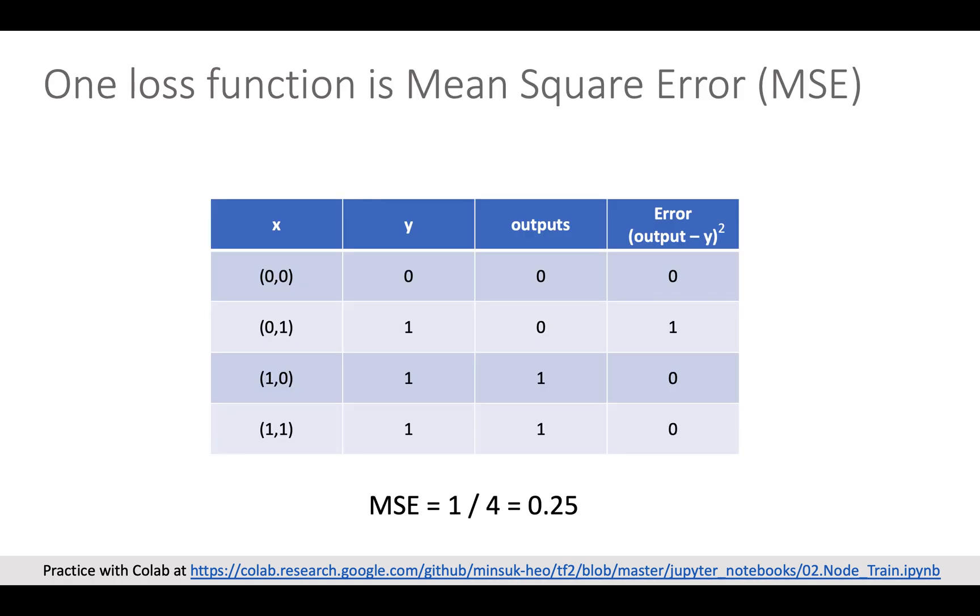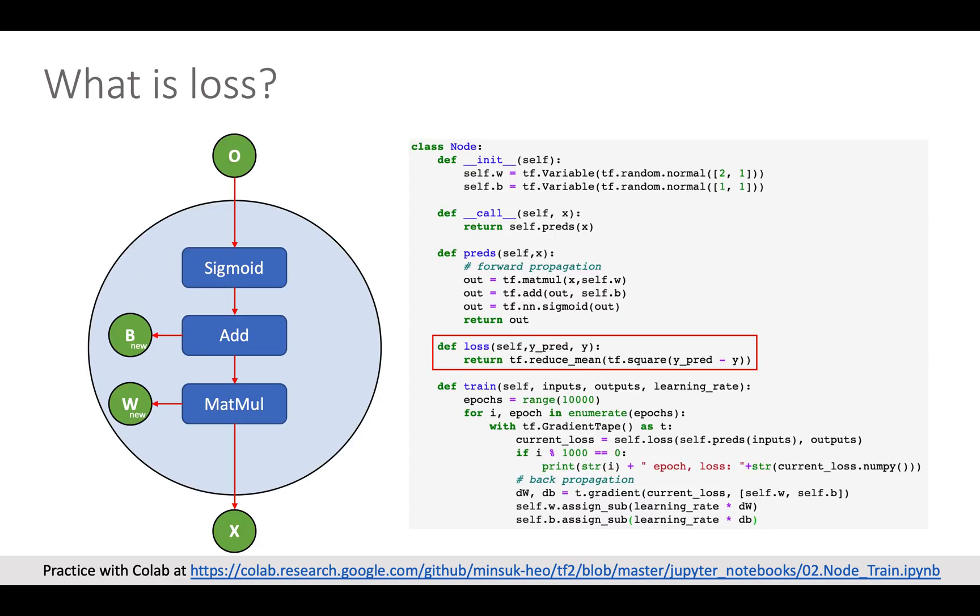One of famous loss function is mean square error which I used in this TensorFlow 2 practice. It is just mean value of the squared distance between the answer and prediction. And it is just one liner in TensorFlow 2.